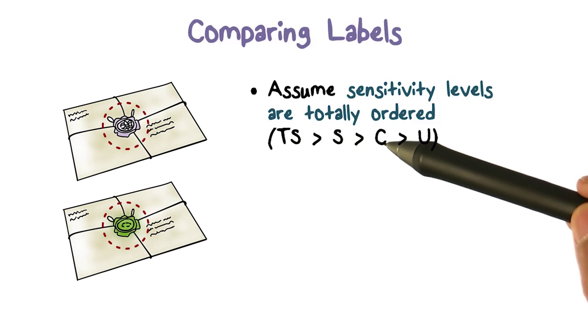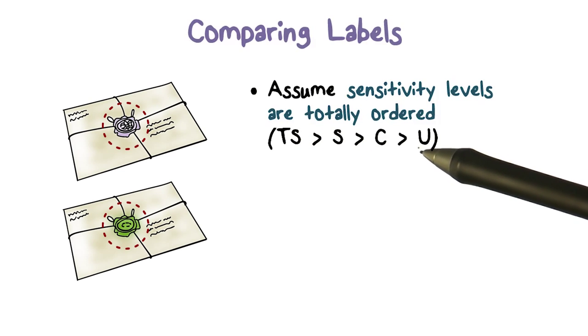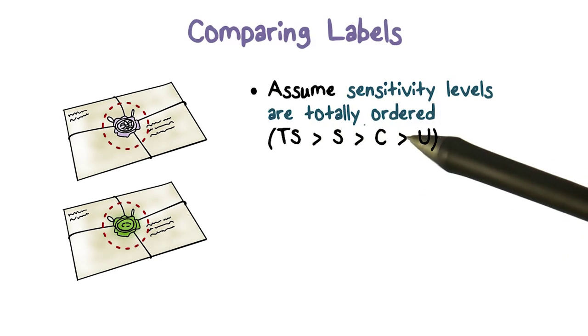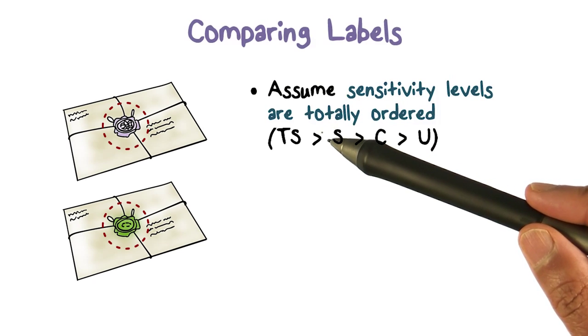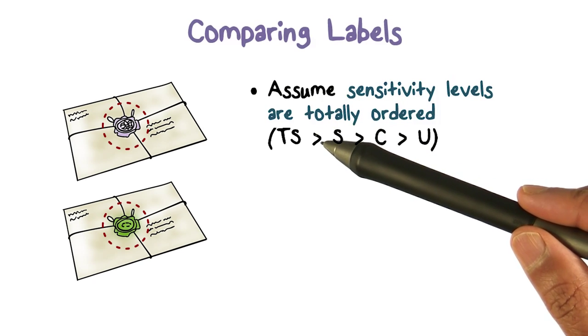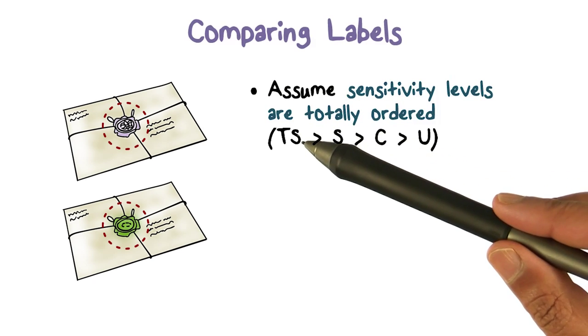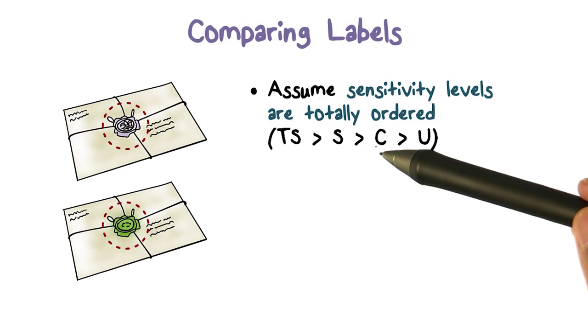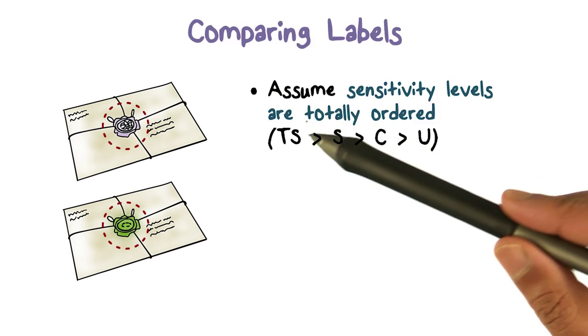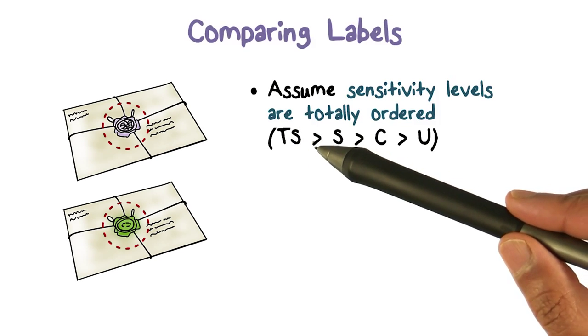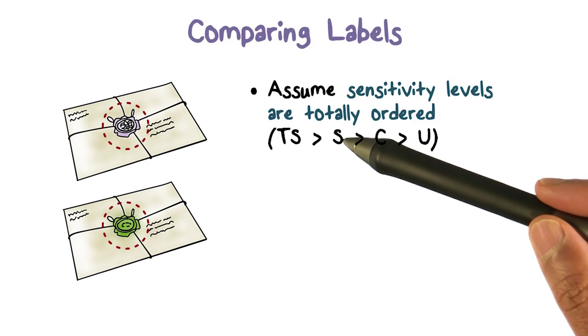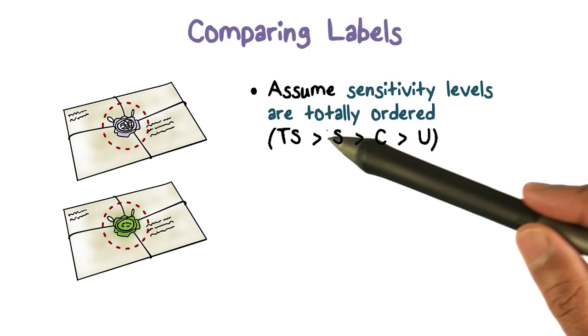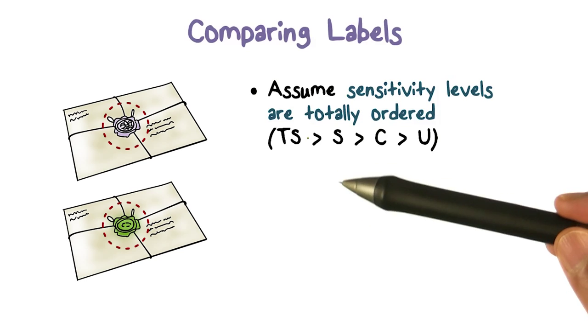What does this greater than mean? We are saying that these levels are ordered totally. By total order, what we mean is that if I pick any two of these, I can tell you which one is more sensitive than the other. TS is the most sensitive. If you took TS and any other level, we know that this is greater than the other level. Similarly, secret is greater than classified. This greater means a higher level of sensitivity.